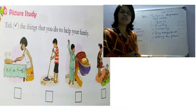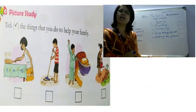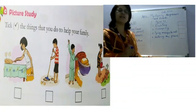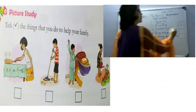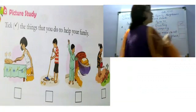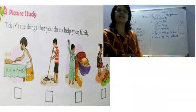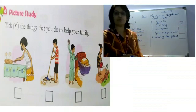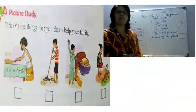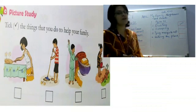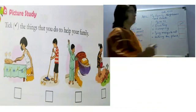The girl in the picture is dusting the table. If you are doing it, put a tick mark. Now, second one. The boy is sweeping the floor. If you sweep, then put a tick mark. If not, cross mark.